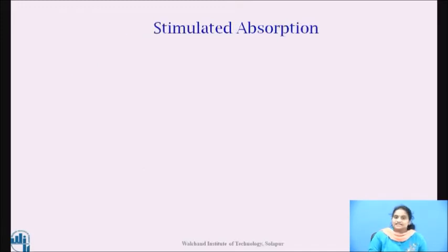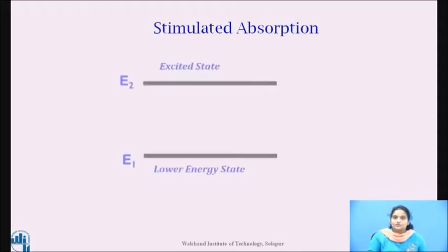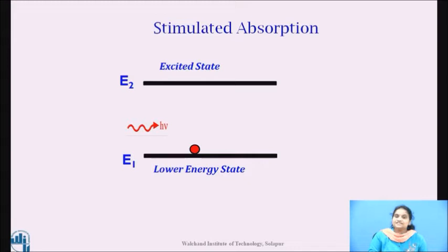So students, let us start with absorption. Suppose, an atom in the lower energy level E1 and if a photon of energy h nu that is E2 minus E1 is incident on the atom, it imparts its energy to the atom and disappears. Then what we say? We say that the atom absorbed the incident photon. As a result of absorption of sufficient energy, the atom jumps to the excited state E2 and this is known as stimulated absorption transition.